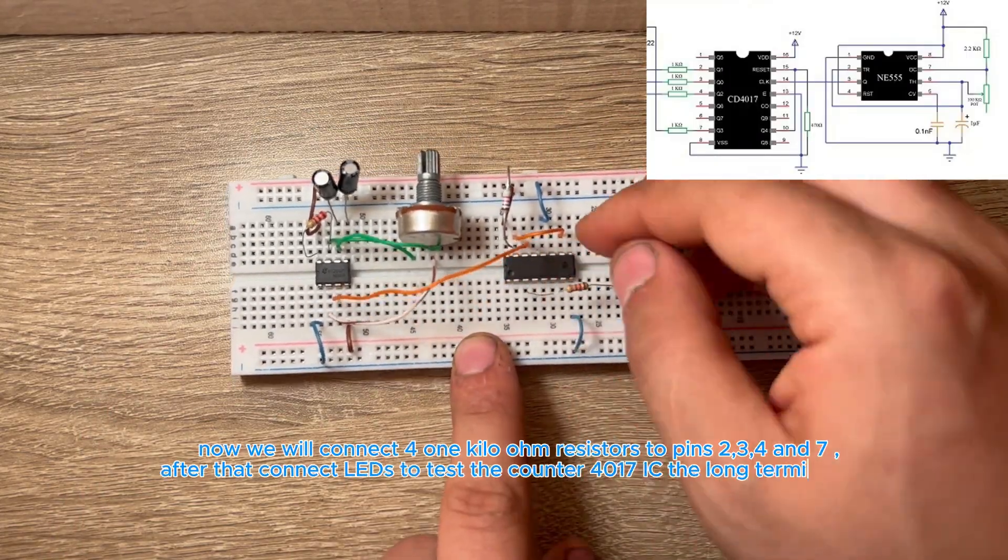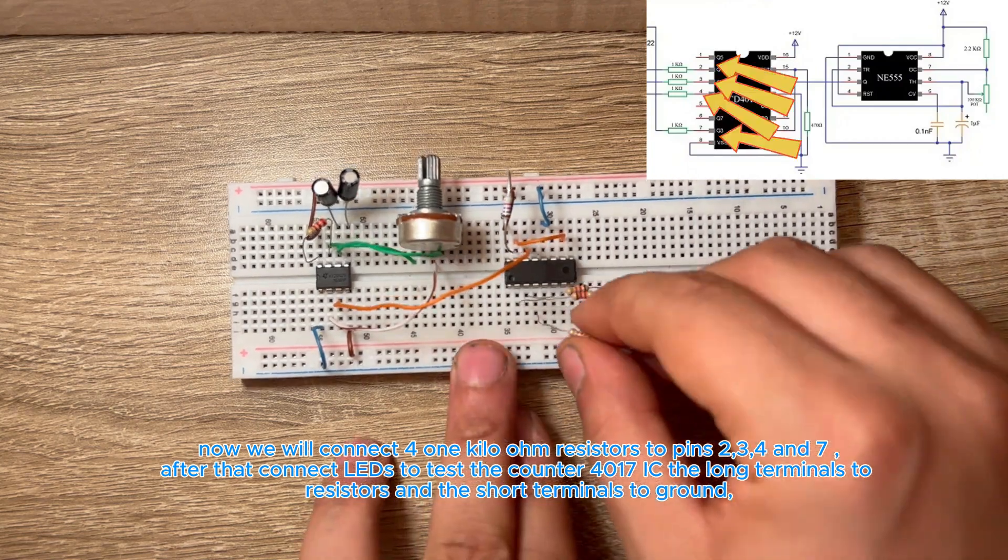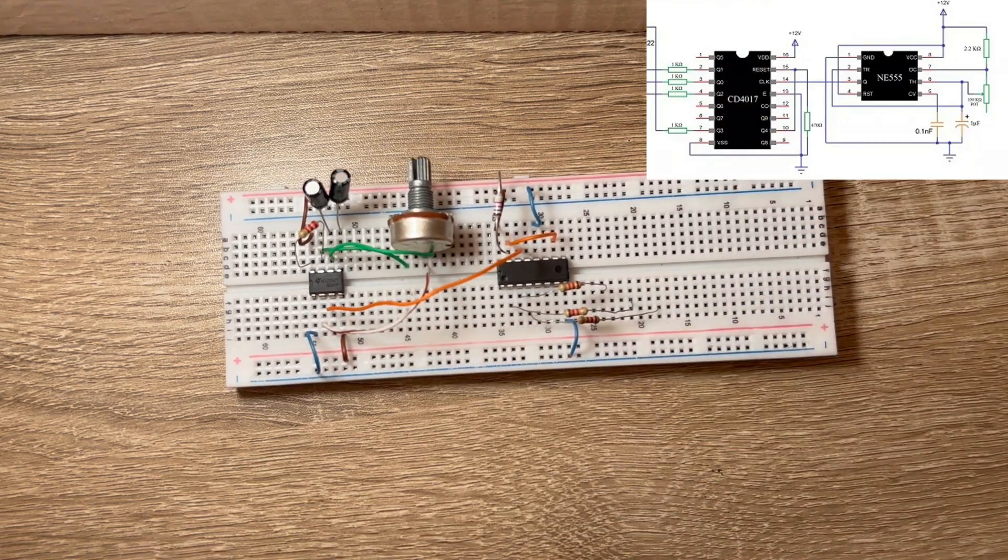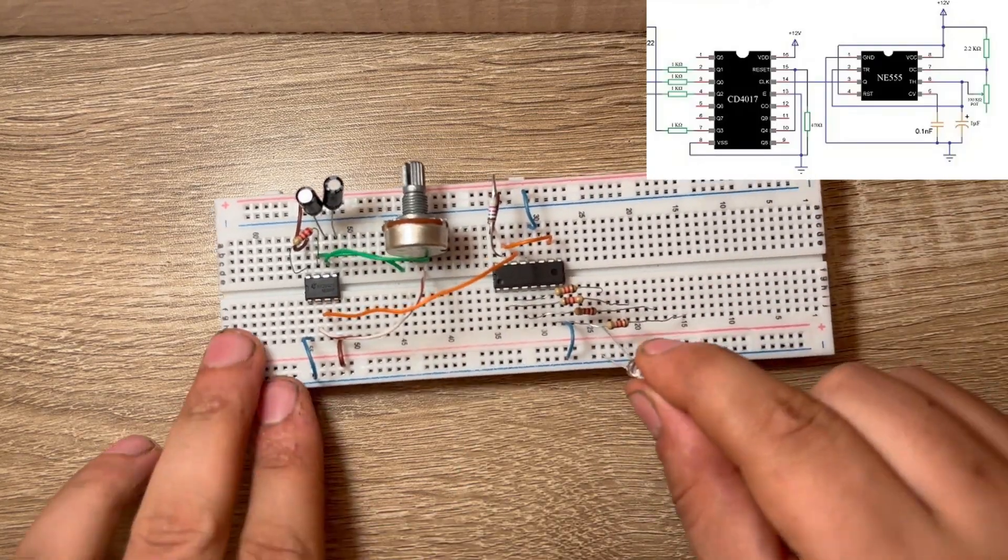Now we will connect four 1 kilo-ohm resistors to pins 2, 3, 4, and 7. After that, connect LEDs to test the counter 4017 IC. The long terminals go to resistors and the short terminals to ground.